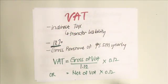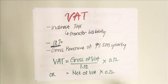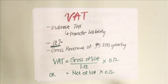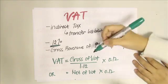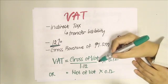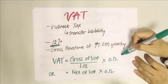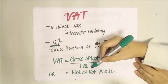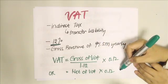Anyone with a gross revenue of 1.5 million pesos every year is required to pay VAT and must register with the Bureau of Internal Revenue, or BIR. If a VAT-exempt entity registers as VAT-registered, they still have to pay the VAT. The formula to get VAT is the amount gross of VAT divided by 1.12 multiplied by 0.12, or if you have the amount net of VAT, you simply multiply by 12%.